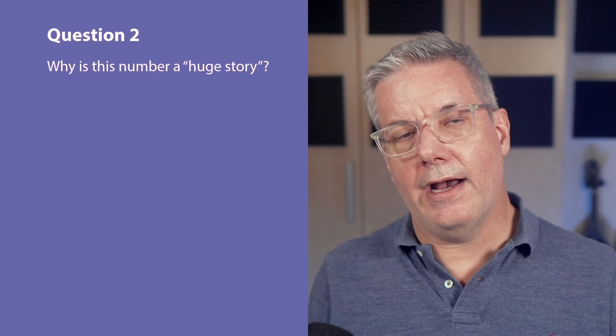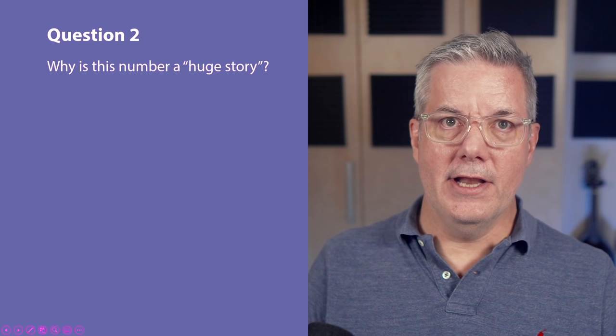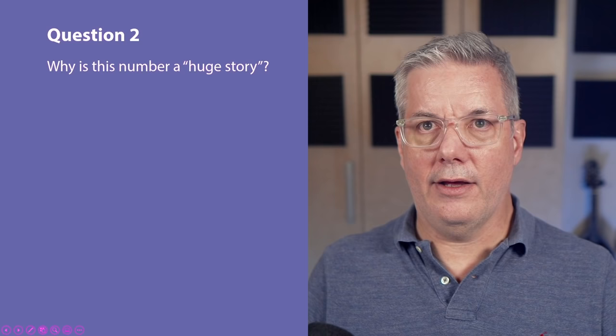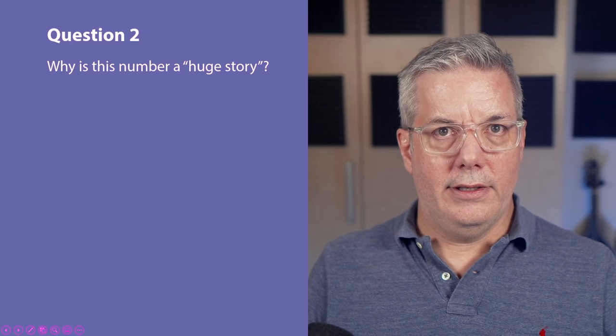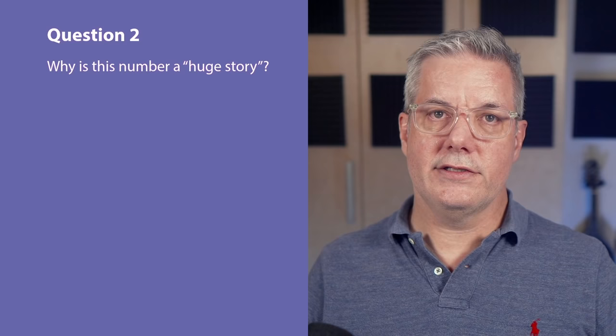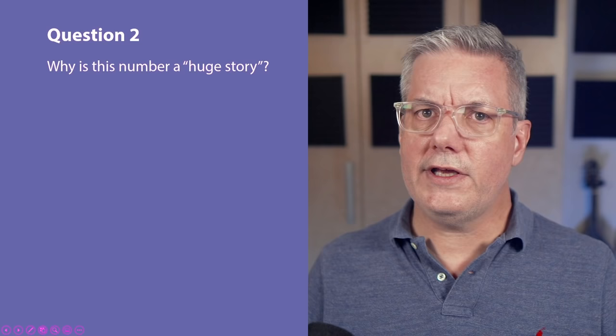I think it wasn't picked up because it's not that surprising. It's not actually a number that is different from what people who understand how these things work would expect — that people die with pre-existing conditions. It's not surprising that people with COVID died while having pre-existing conditions. So it's not a huge story. Why do you think it's a huge story? What do you think is missing that makes it a huge story?